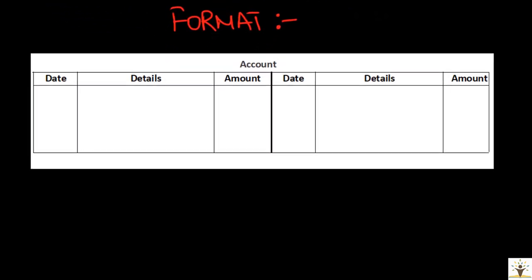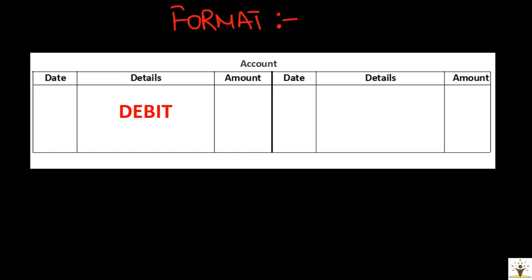The account is divided into two sides. The left side is the debit side and the right side is the credit side. So the debit effect on an account in a transaction is recorded on the debit side of the account and in the same way the credit effect is recorded on the credit side of the account.